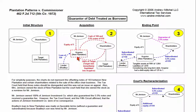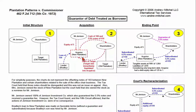New Plantation borrowed cash of $150 from Bradley. New Plantation then acquired the shares of Old Plantation from its shareholders for cash of $100 and notes of $610. Old Plantation was immediately liquidated into New Plantation.